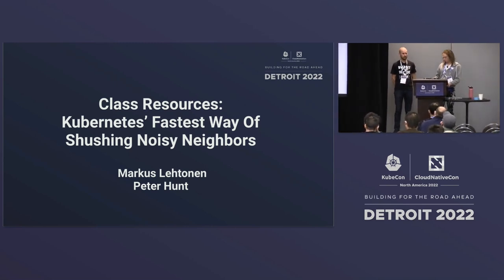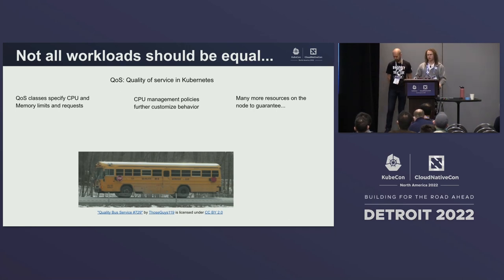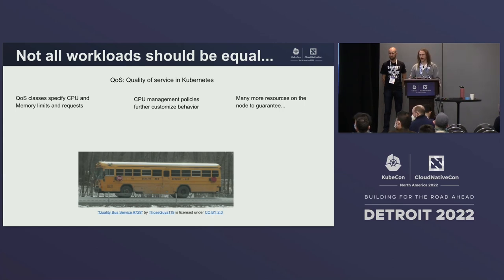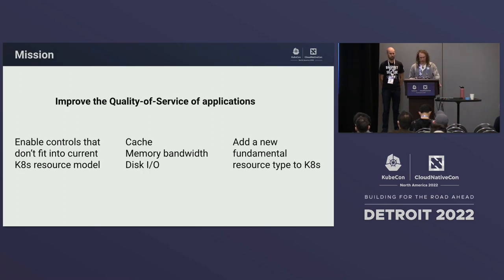In Kubernetes, we don't really expect all workloads to be treated equally. There's been a native construct in Kubernetes representing this, which is QoS — quality of service. QoS classes specify CPU and memory limits and requests. Another mechanism since Kubernetes 1.19 is CPU management, which allows pinning containers to certain CPUs. But ultimately there are more resources on a node to guarantee quality of service for, and that's the issue we're looking to solve.